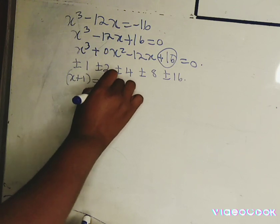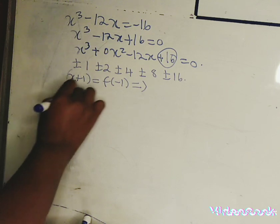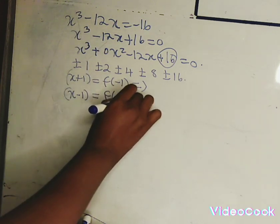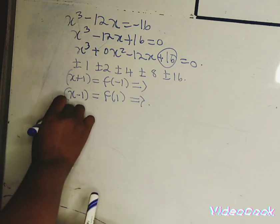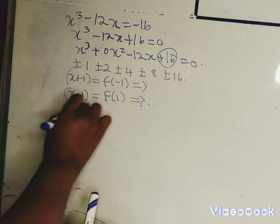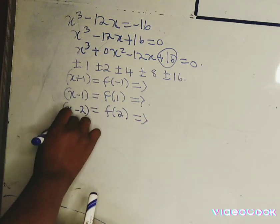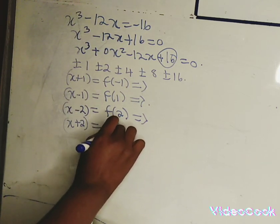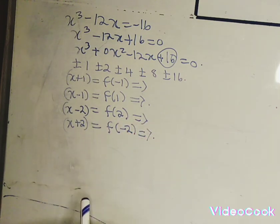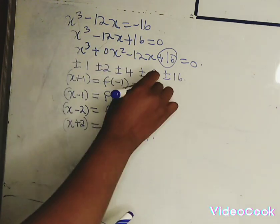Let's try x plus 1 as a factor, meaning we check f of minus 1 to see if it gives us 0. Let's try x minus 1, checking f of 1. Then try x minus 2, checking f of 2. Similarly for x plus 2, checking f of minus 2. We go through these until we find a factor.